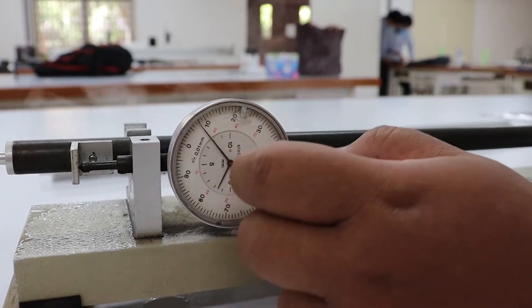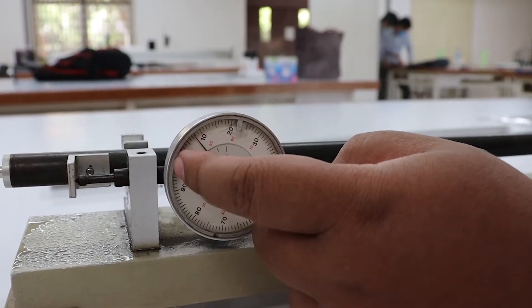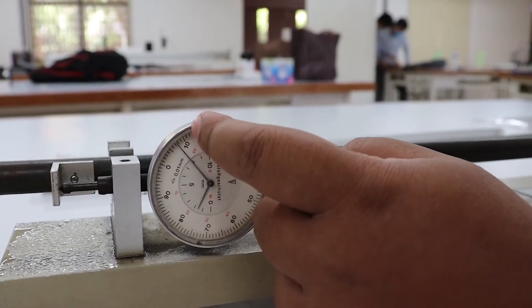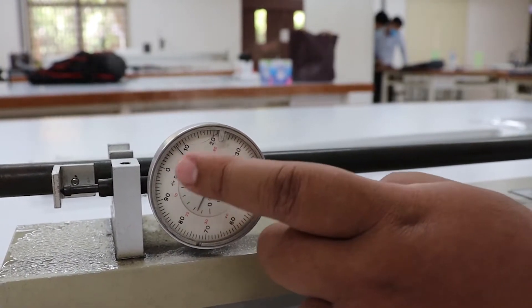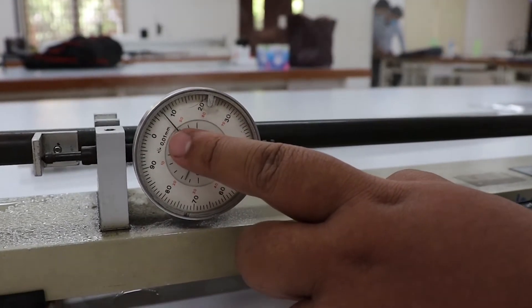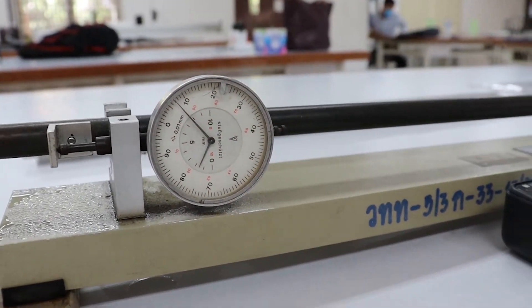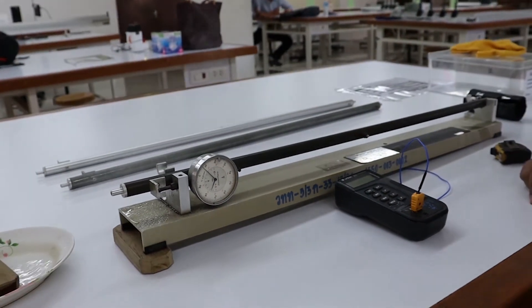For example, if the long hand is at 0 at the beginning and then goes to number 10, delta L is 90 times 0.01 millimeters because the dial gauge moves backward.